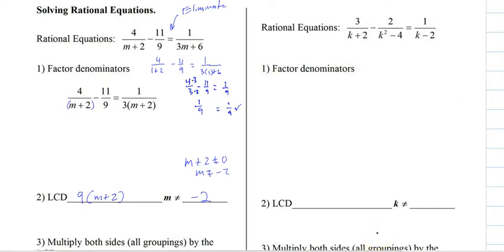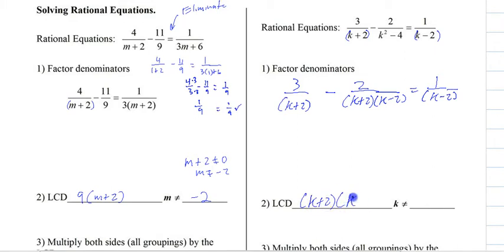All right. Let's do another one, just to go through it twice. So we need to factor our denominators. So the first one is 3, and then k plus 2, minus 2, and then k plus 2, k minus 2. So our LCD would be, we have a k plus 2, and a k minus 2.